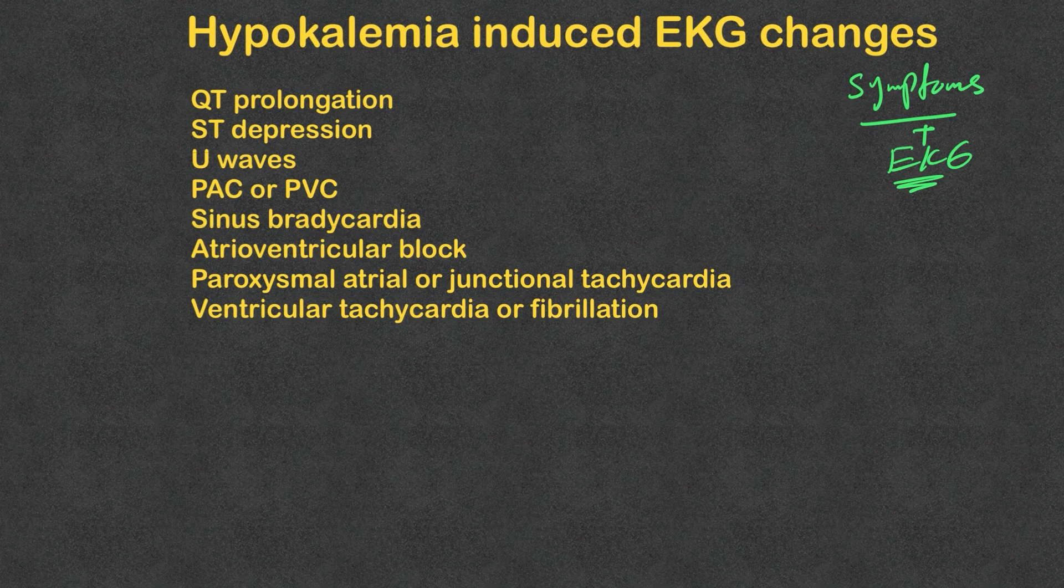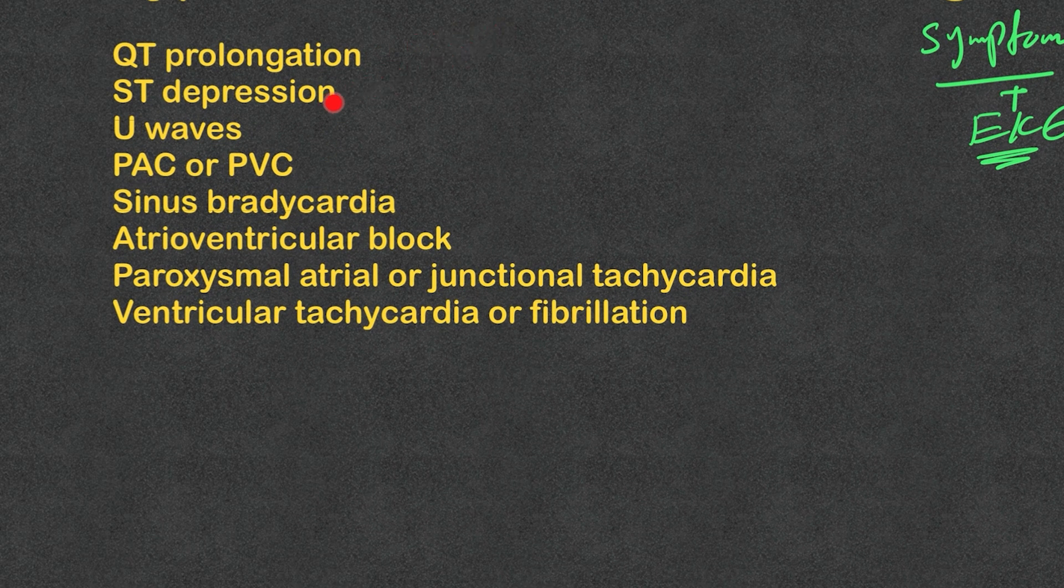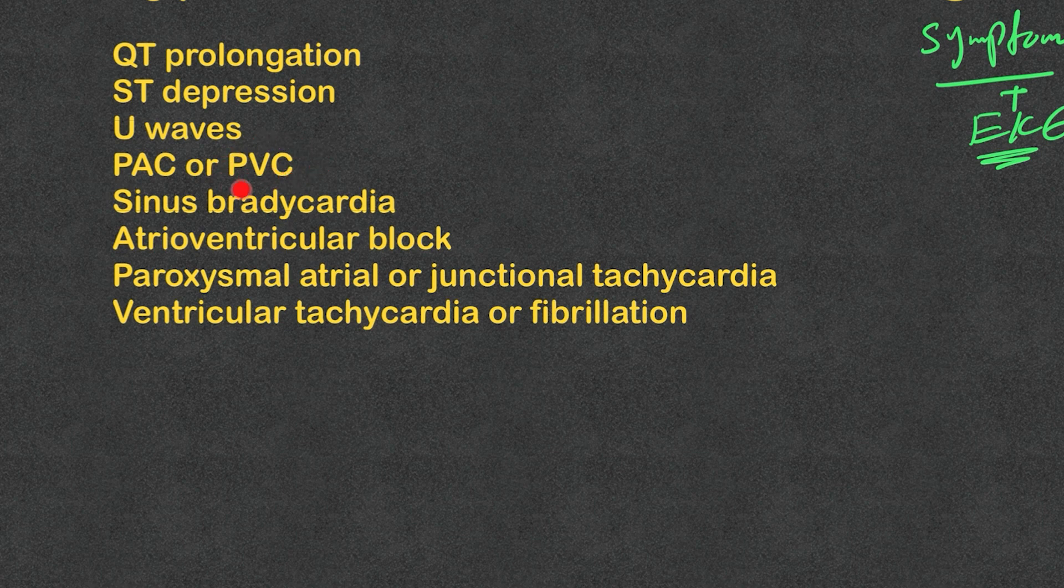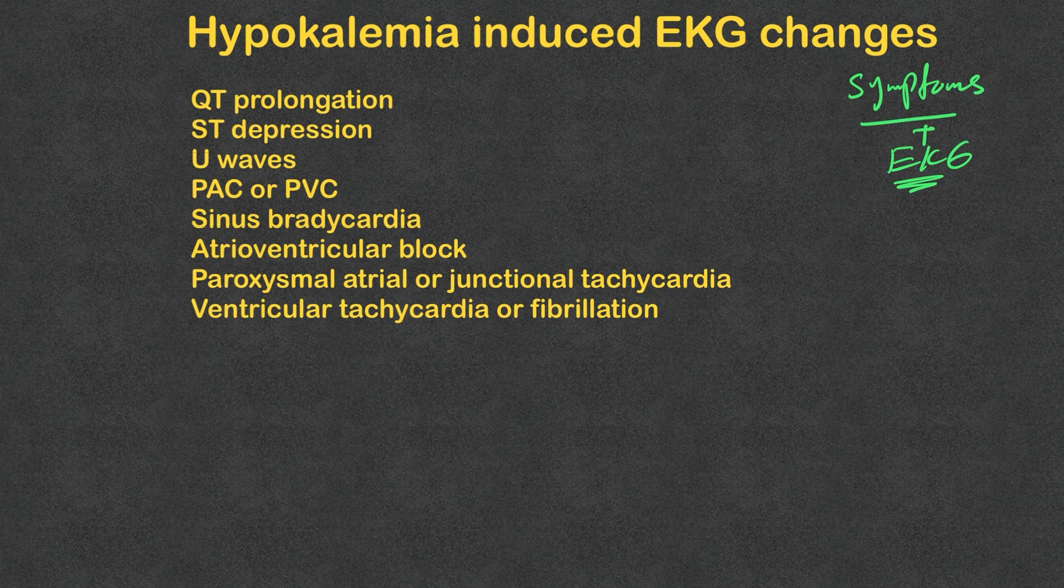What are these EKG changes? We have a wide range of EKG changes that can be seen in hypokalemia: QT prolongation, ST depression, U waves, premature atrial complexes, premature ventricular complexes, sinus bradycardia and AV node block, paroxysmal atrial or junctional tachycardia, and ventricular tachycardia or fibrillation, and of course cardiac arrest.